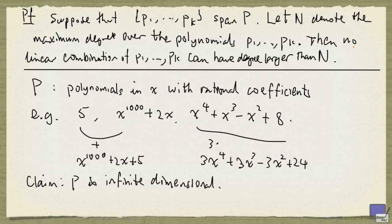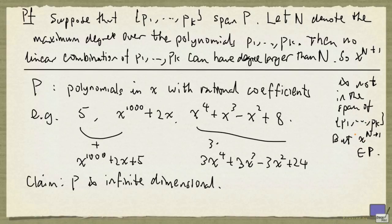So for example, x^(N+1) is not in the span of this set of vectors, p1 up to pk. But x^(N+1) is in P. This is a contradiction. So p1 up to pk does not span P.